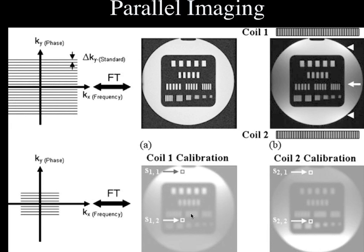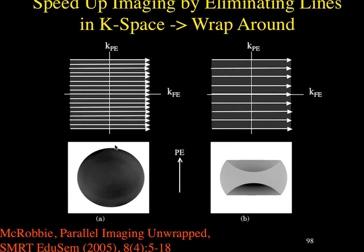Instead of shrinking down and just taking lines in the center of k-space, what if we remove some lines so there are lines of k-space we don't acquire? We're still acquiring the edges of k-space, so resolution will be maintained, but we get wraparound artifact. By separating the lines in k-space like this, it's the same as decreasing the field of view in that direction, which ends up with wraparound artifact.